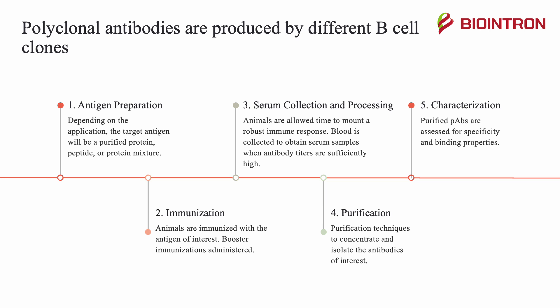Polyclonal antibody production starts with antigen preparation. Depending on the application, the target antigen will be a purified protein, peptide, or protein mixture. The second step is to immunize the animals — for example rabbits, mice, or goats — with the antigen of interest. Booster immunizations are then administered to enhance the immune response, activating B cells. In the third step, we collect their serum and process it; blood is collected to obtain serum samples when antibody titers are sufficiently high. The fourth step is purification, where techniques such as protein A or protein G affinity purification are used to concentrate and isolate the antibodies of interest. Finally, the purified polyclonal antibodies are characterized to assess their specificity and binding properties, which may take several days of testing.